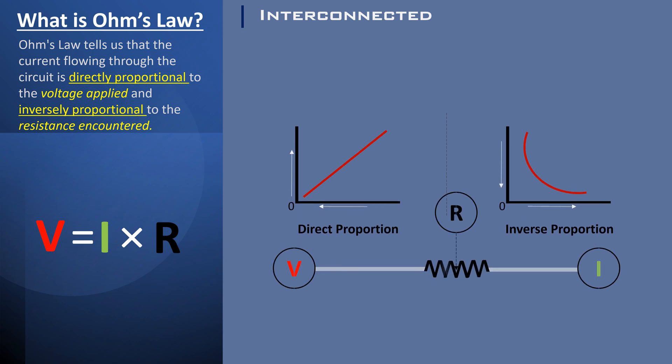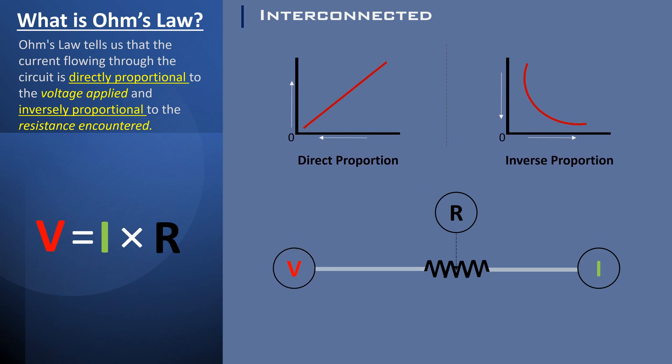Which means to say, any amount of voltage passing through a circuit from point A against the resistance encountered is proportional to the current reaching point B. Now, let's explore how these real-life scenarios work in a lightbulb circuit.